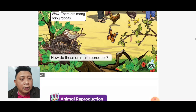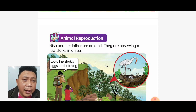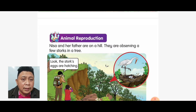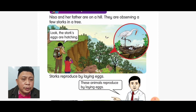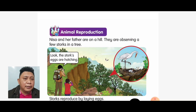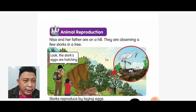Now look at animal reproduction. Nisa and her father are on a hill — they are observing a few stalks in a tree. Look, the stalks' eggs are hatching! Stalks reproduce by laying eggs. So this picture is about Nisa and her father observing — pemerhati — a few stalks, which means bangau, in a tree.